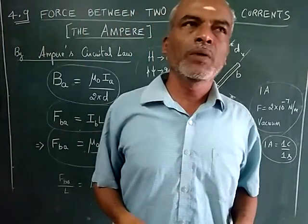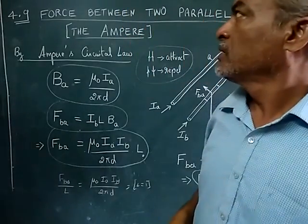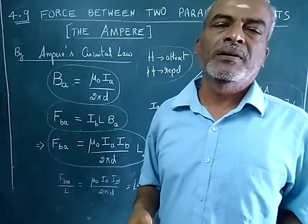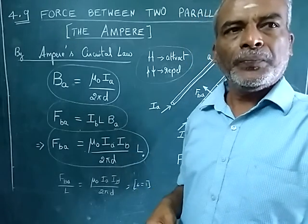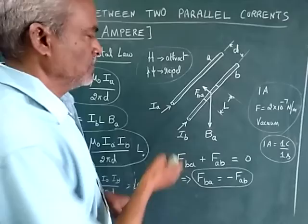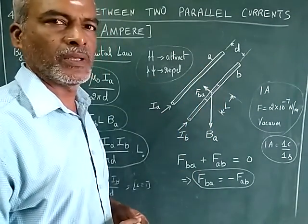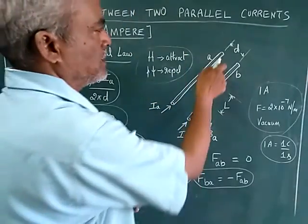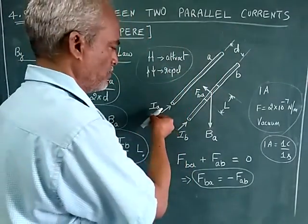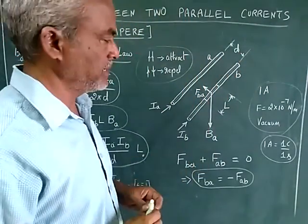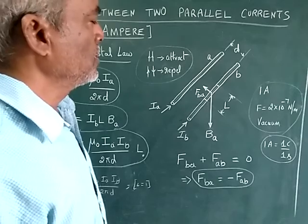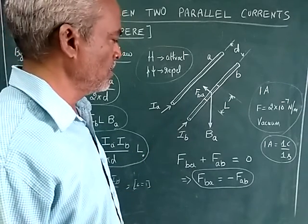Hello viewers, today we are going to see about force between two parallel currents. Basically, we are going to define one ampere current. We have two conductors — assume infinitely long — conductor A and conductor B. The distance between these two conductors is d. Both currents are moving in the same direction, with current IA in conductor A and current IB in conductor B.